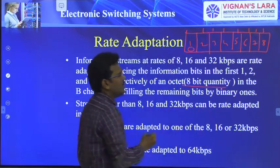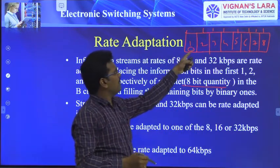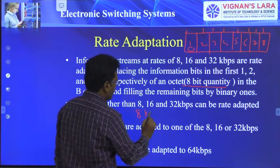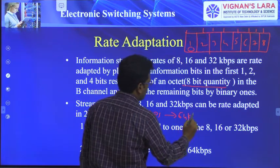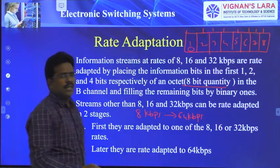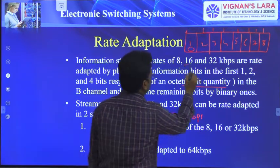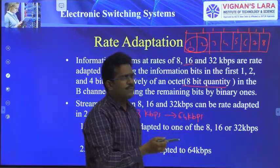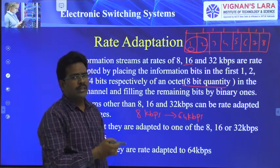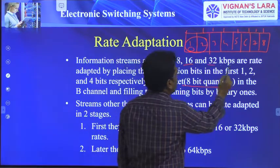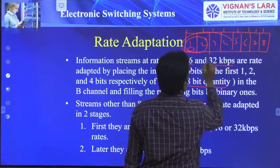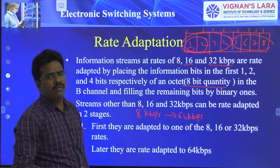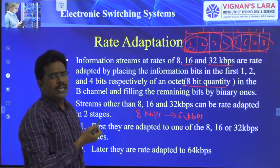In the octet, we place the information in the first bit position and the remaining 7 bits are padded with one. That is the way to convert 8 kbps into 64 kbps. This mechanism is called rate adaptation. To convert 16 kbps, use the first 2 bits for information and remaining 6 bits as ones. To convert 32 kbps, use 4 bits as information bits and remaining 4 bits as ones. This is the way of converting from a lower bit rate to a higher bit rate.